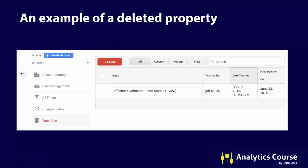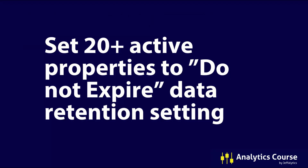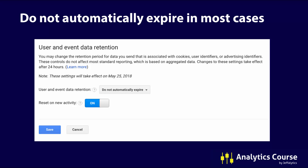Here's an example of a deleted property — something I set up a long time ago that I don't use at all for analysis, with no data being collected, so I decided to delete it outright. I also set 20-plus active properties to 'Do Not Expire.' The way I did this was by going into each property, choosing 'Do Not Automatically Expire' when the pop-up appeared, saving that setting, and moving on to the next one. It might sound like a lot of work, but it took me about 10 minutes — and that was 10 minutes well spent.